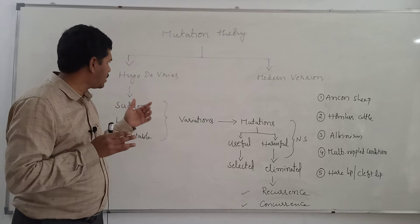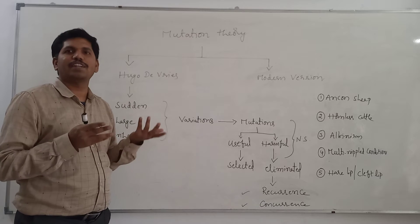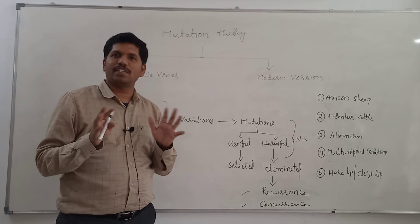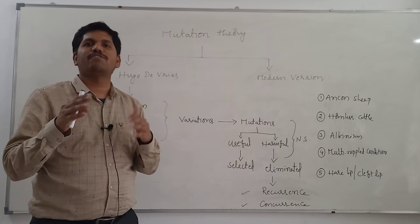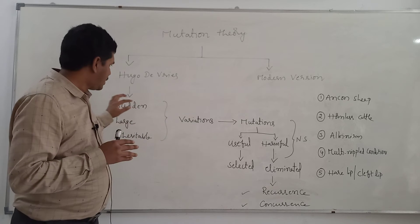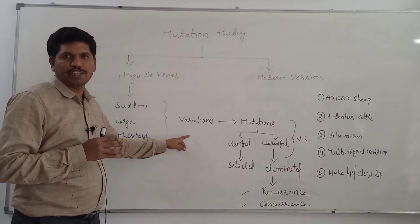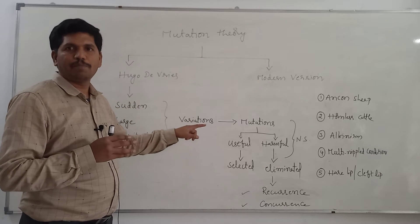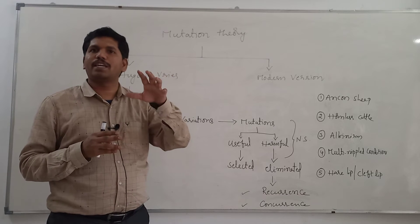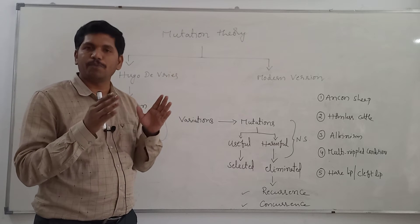Instead of 'sudden,' some textbooks use the term 'discontinuous.' Sudden means they are not taking place in each and every generation. These sudden, large, inheritable variations which appear in different life forms — they can be plants or animals — are called mutations.